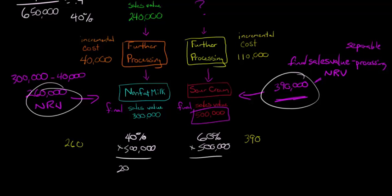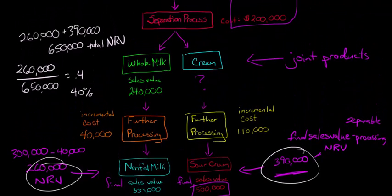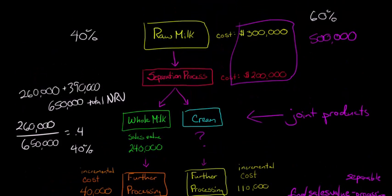Now, this is the joint costs, where I'm not getting into the separable costs here. Those are obviously a cost too. This $110,000, for example, with the sour cream, that's a cost we want to consider as well. But right now, we're just worried about allocating the joint costs. I'm just talking about this $500,000.